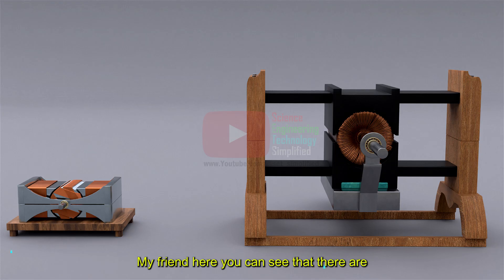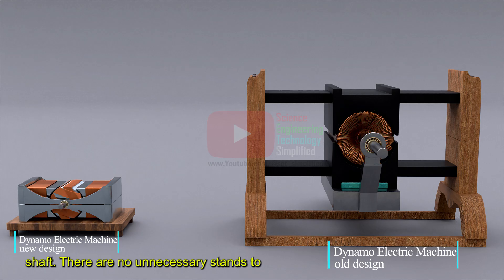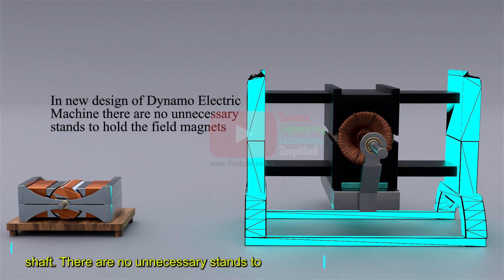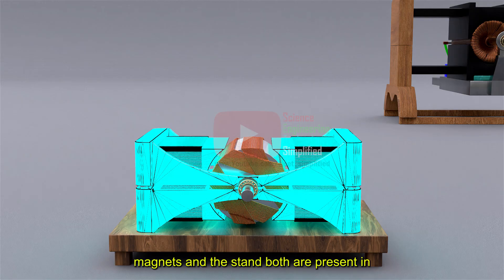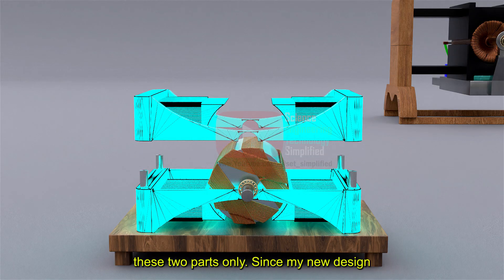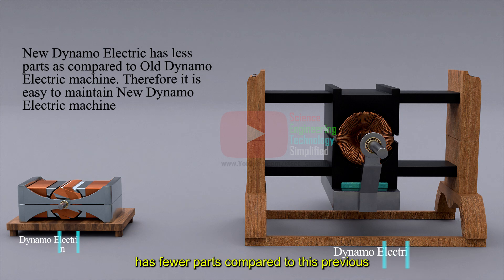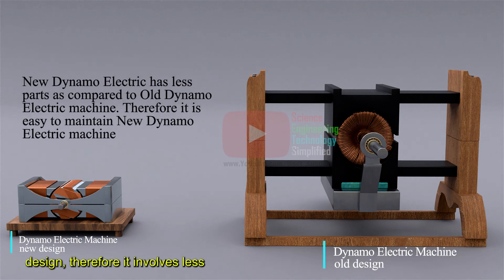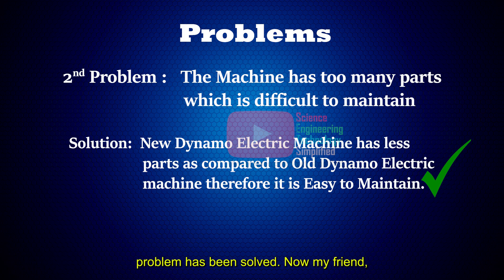My friend, here you can see that there are no unnecessary projections to hold the shaft, there are no unnecessary stands to hold the field magnets. Here the field magnets and the stand both are present in these two parts only. Since my new design has fewer parts compared to this previous design, therefore it involves less trouble in maintenance. So your second problem has been solved.